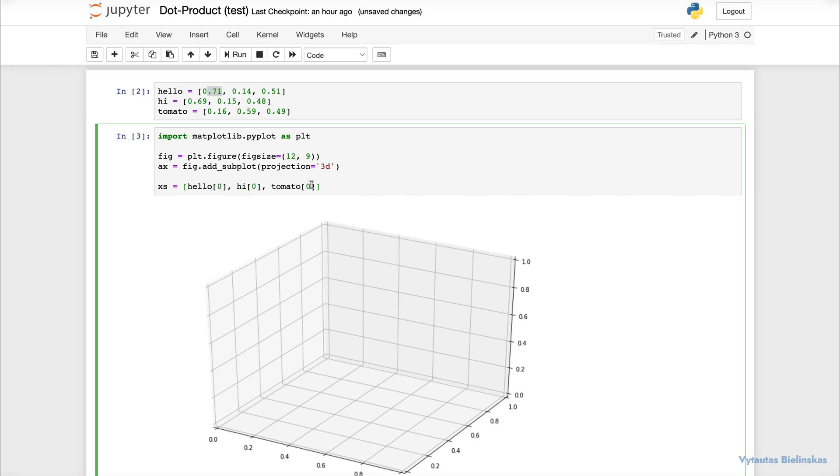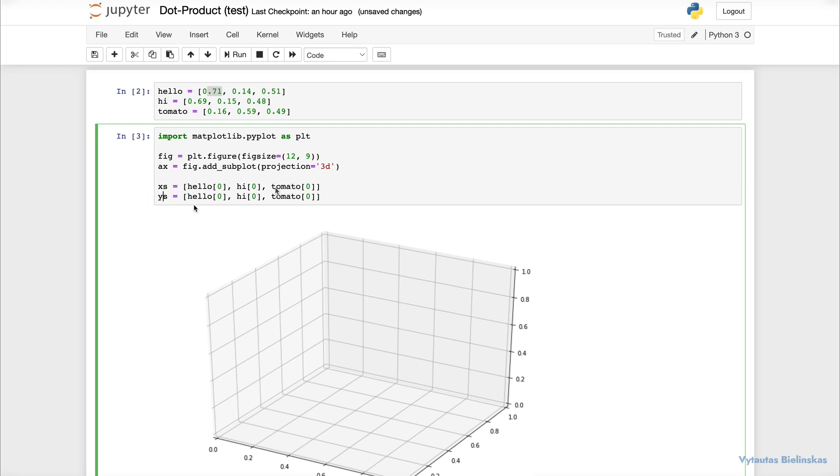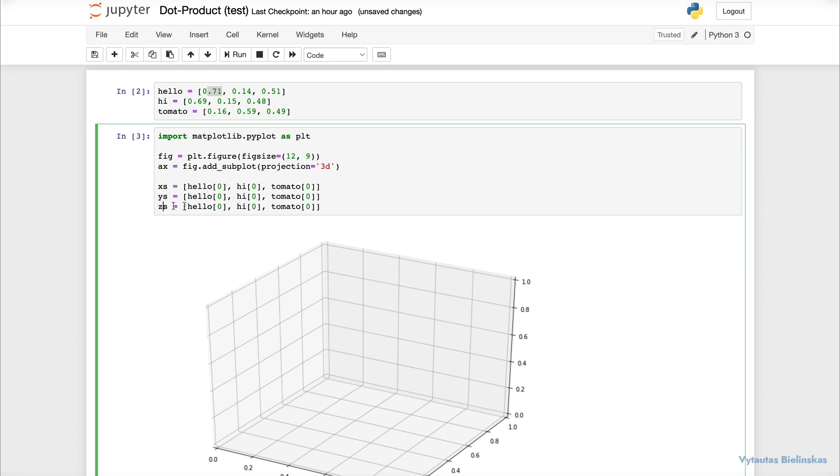Let's copy that and we will do the same for ys and zs. For ys we will need the index equal 1 from each vector. And for zs do the same. Here we will use index equal 2 from each vector.